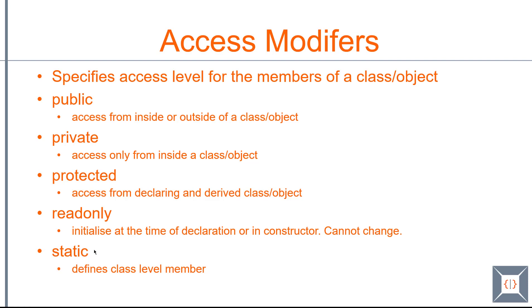And the next one is static. Similar to read-only, you can combine static with public, private, and protected modifiers. Static is used to define a member at a class level rather than creating a member for the object, which is called an instance member. With static you will be creating a class-level member. Let's see some examples for these now.